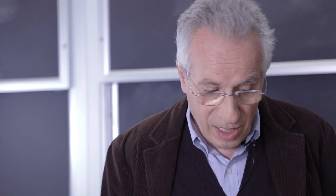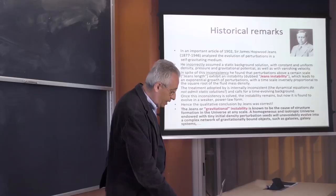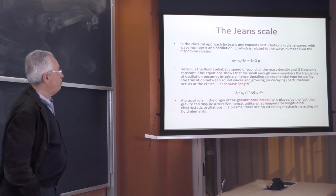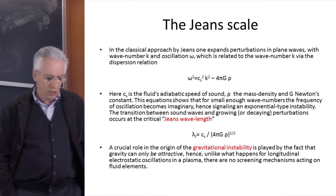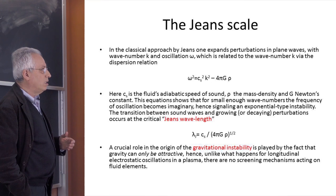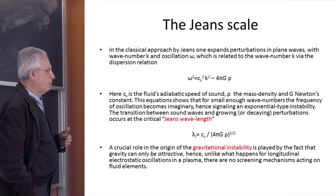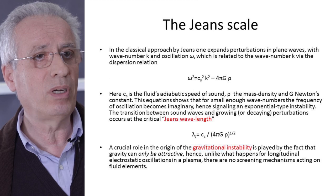We are now going to improve this treatment by accounting for a self-consistent solution of the problem. Before doing that, let me make some comments on the results by Jeans. What you do is to write down the equations, linearize around the background, write equations for perturbations, go to Fourier space, and at some point arrive at the so-called dispersion relation.